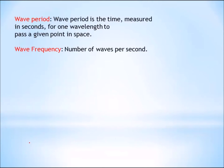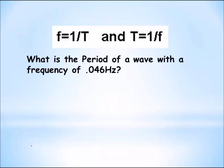Wave period — remember, wave period is the time measured in seconds for one wavelength to pass a given point in space, and wave frequency is the number of waves per second. Here's a problem — see if you can solve it. Go ahead and pause the video, solve the problem, and then turn it back on and we'll go over it together.